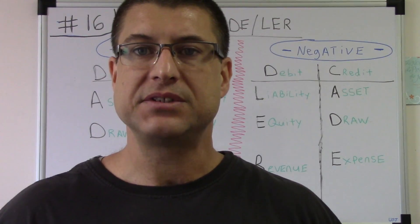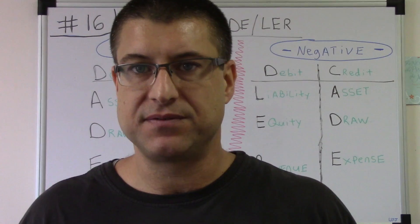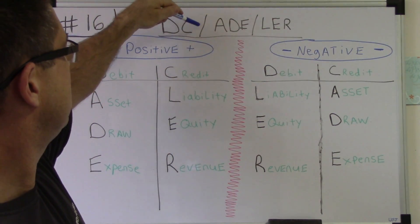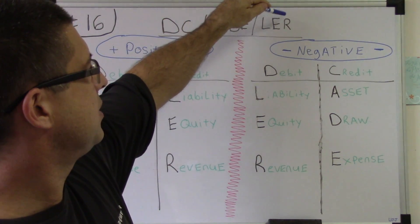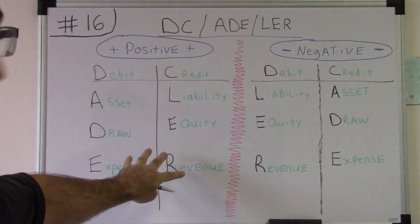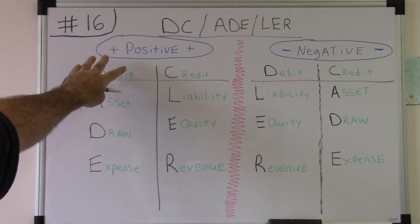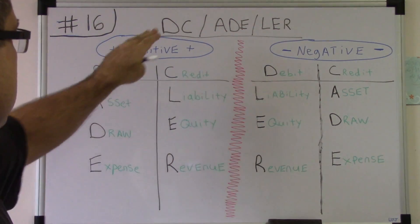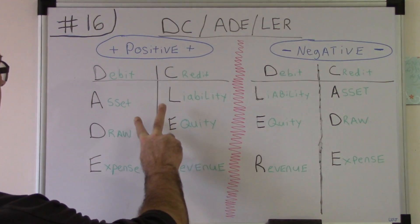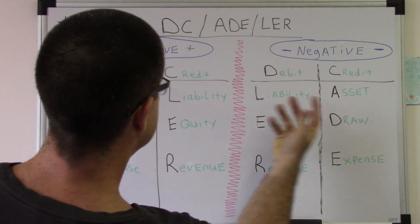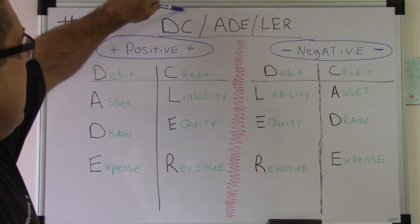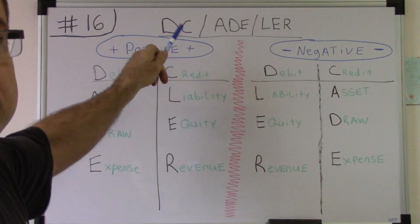I want you to start with DCA LURE. I always tell you DCA LURE is in the positive form — Debit, Credit, Asset, Draw, Expense, Liability, Equity, Revenue. This is the positive side. You flip these right here like a mirror.